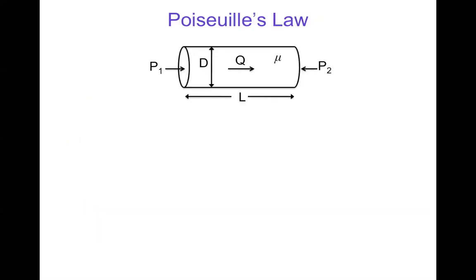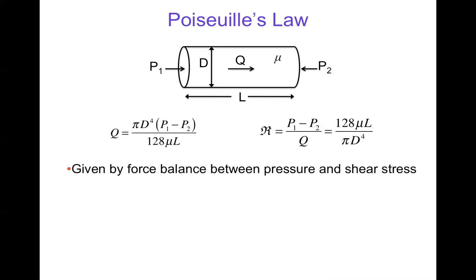For Poiseuille's law, we assume a tube with diameter d, viscosity mu, length L, this delta P which would be P1 minus P2, and some flow rate Q. We can show that a balance between pressure forces and shear stress gives Poiseuille's law, which says that the flow Q is pi d to the fourth times delta P over 128 mu L, and from that we get that the resistance is actually 128 mu L over pi d to the fourth. So Poiseuille's law is this pressure-flow relationship, which involves a resistance that we've shown.